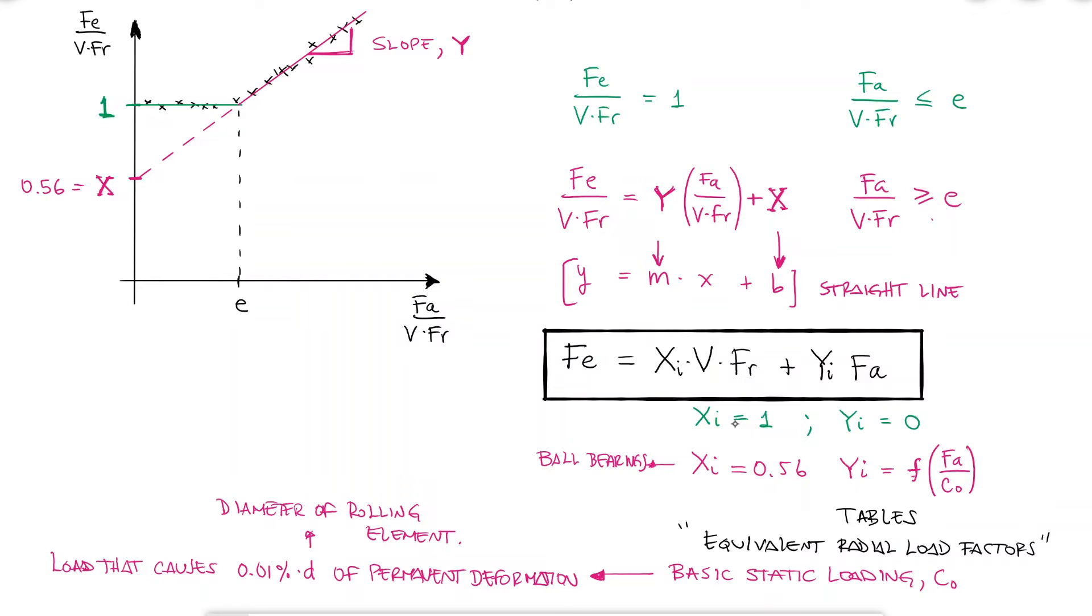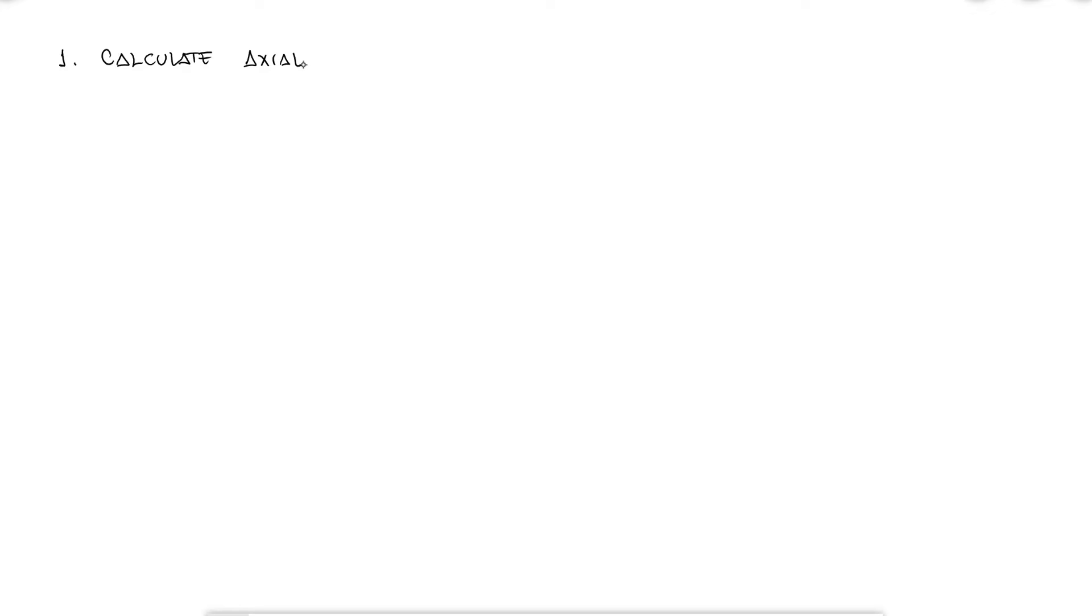Therefore, the first thing you need to calculate after finding the radial loads and the thrust that goes into your bearing is the ratio FA over C0, as this will determine the value of the abscissa E and, if needed, the slope. Since the abscissa E is on the X axis and the X axis is F over VFR, you then take the thrust and the radial load to calculate F over VFR to compare it with E.